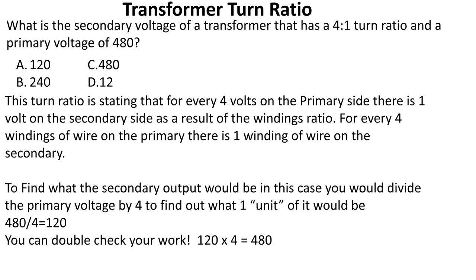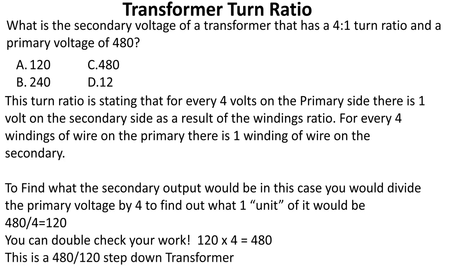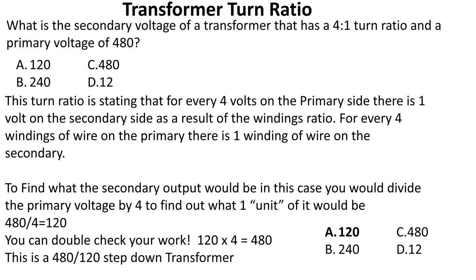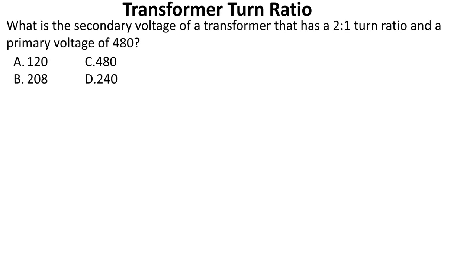You can double-check your work by taking that one unit and multiplying it back by four to confirm you get back to the primary voltage. This is a 480/120 step-down transformer and we're going to select A.